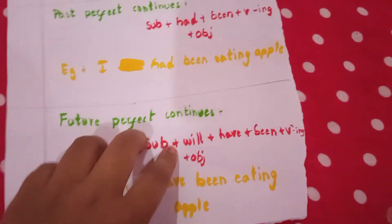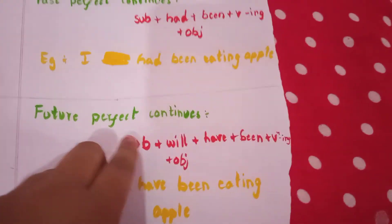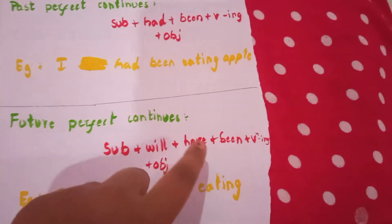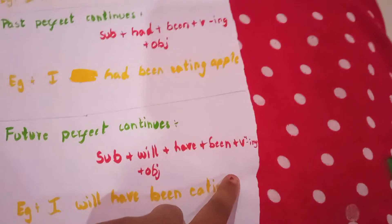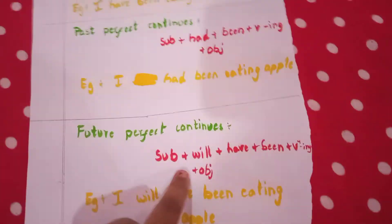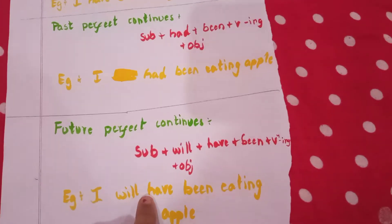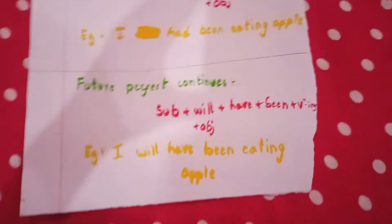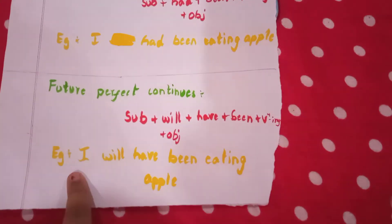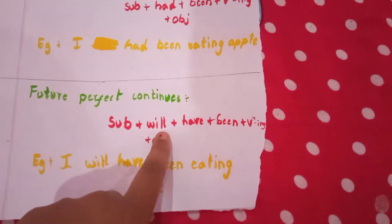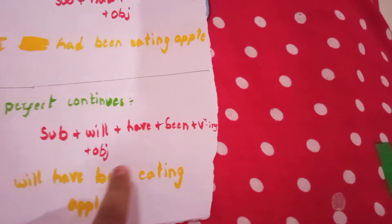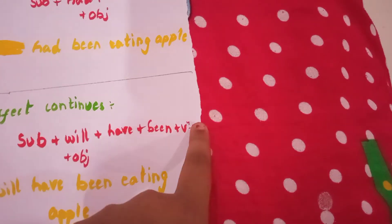Future perfect continuous: subject plus will plus have plus been plus V4 plus object. Example: 'I will have been eating apple.' The subject is 'I', followed by 'will have been', then V4, then the object.